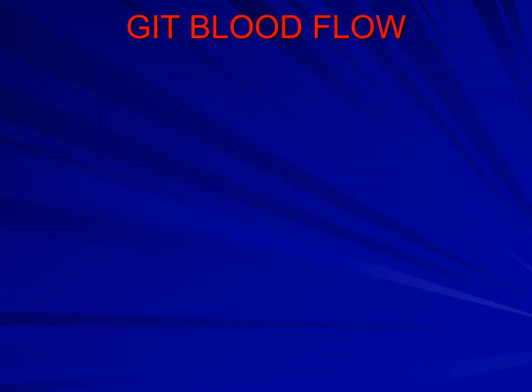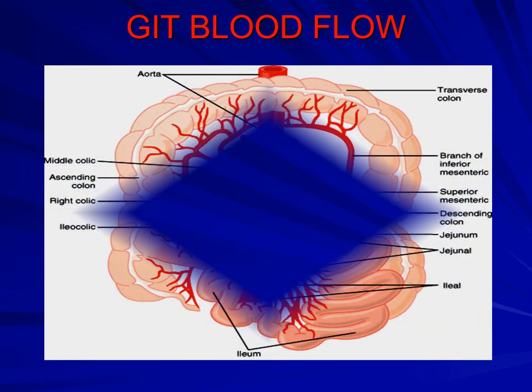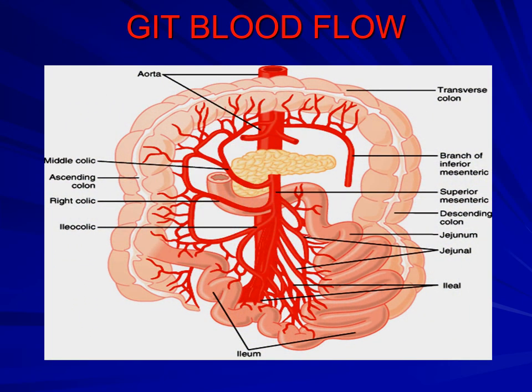Regarding GIT blood flow, the aorta is the main vessel that gives off different branches for the supply of blood towards the GIT.